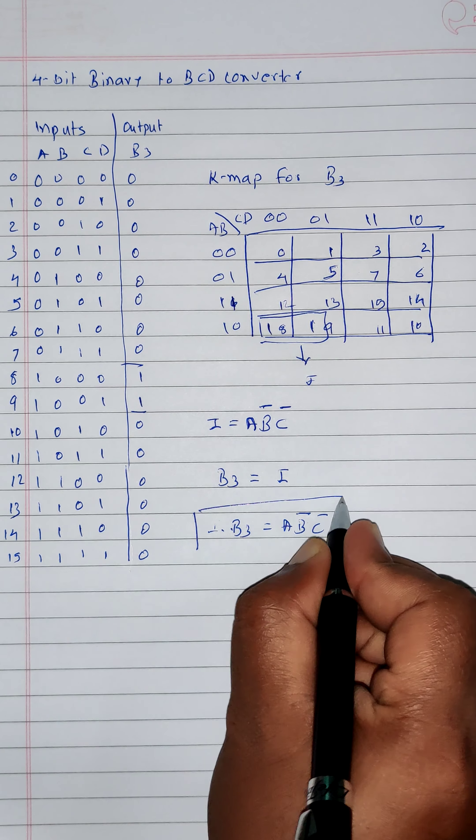So in this way, we got the equation of B3 after solving the Kmap of B3. In the next part, we will see the Kmap for B2. Thank you.